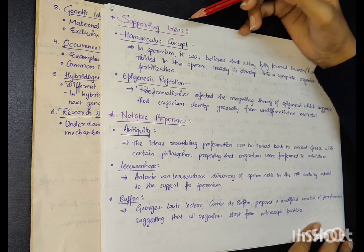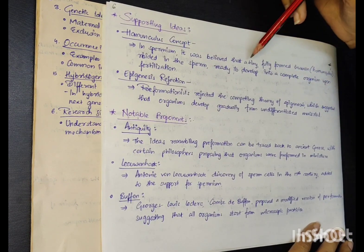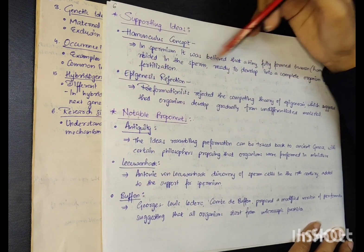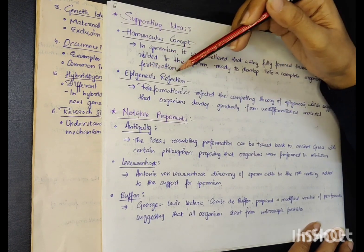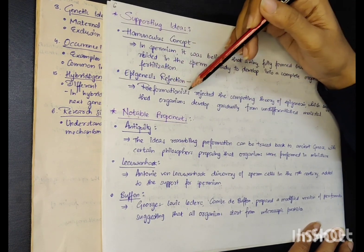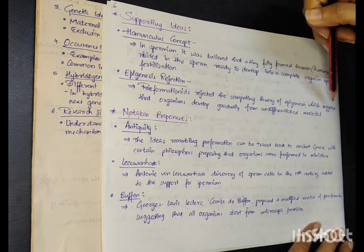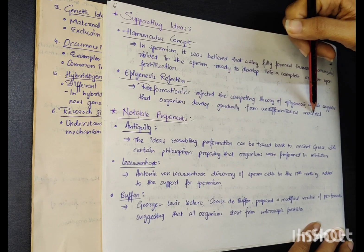Supporting ideas: Homunculus concept. In spermism, it was believed that a tiny, fully formed human, homunculus, resided in the sperm, ready to develop into a complete organism upon fertilization. Epigenesis rejection: Pre-formationists rejected the competing theory of epigenesis, which suggested that organisms develop gradually from undifferentiated material.